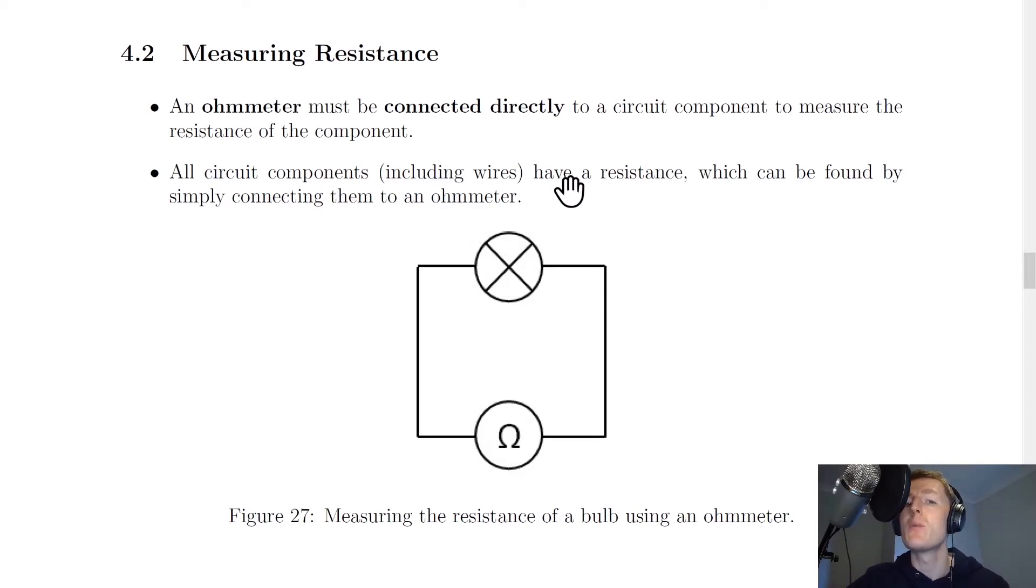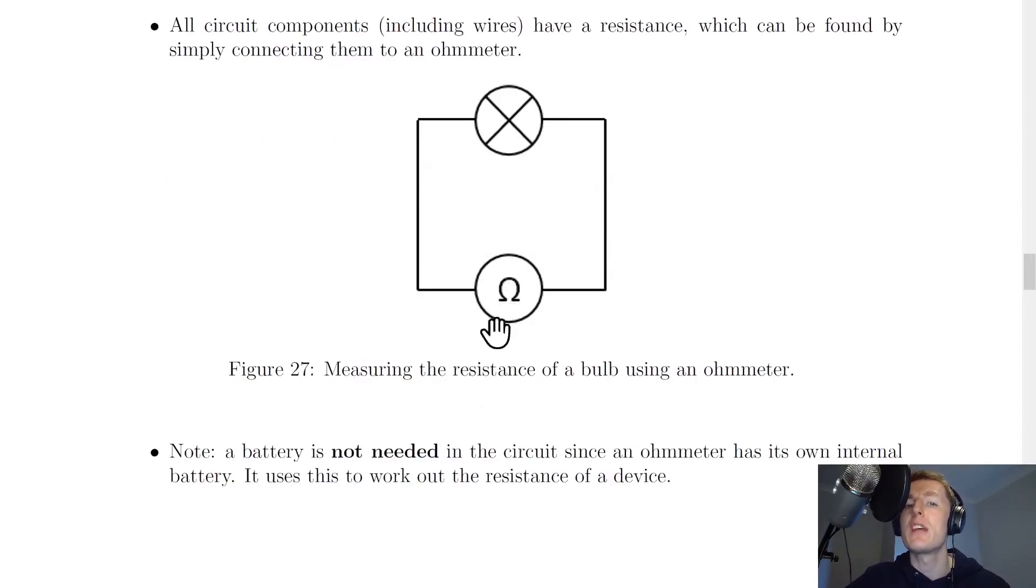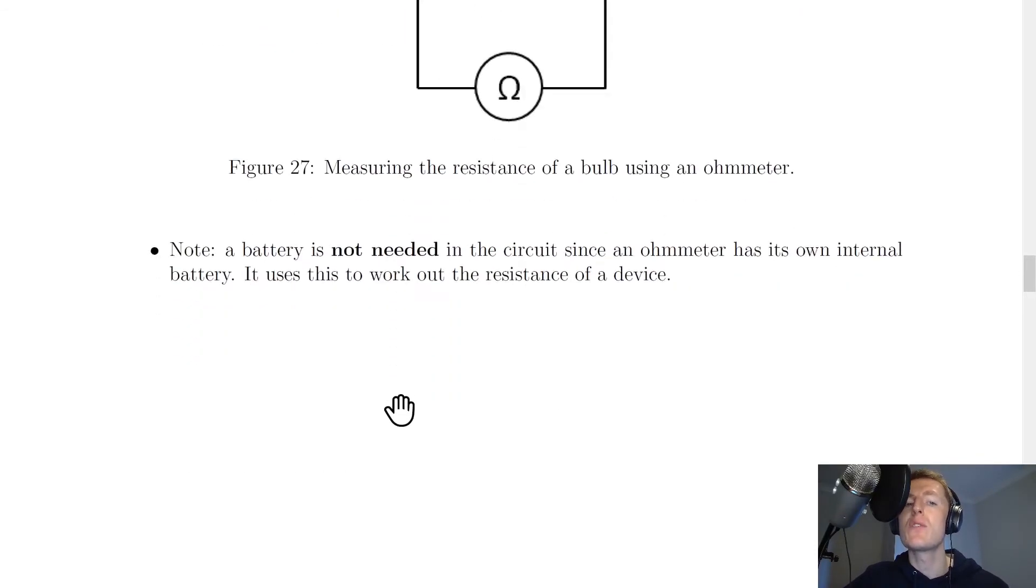It says that all circuit components, including wires, have a resistance which can be found by simply connecting them to an ohmmeter. So if we look at this picture here, you'll see we have a bulb, an ohmmeter, and two wires connecting the bulb to the ohmmeter. This would simply measure the resistance of this component, i.e. of the bulb.